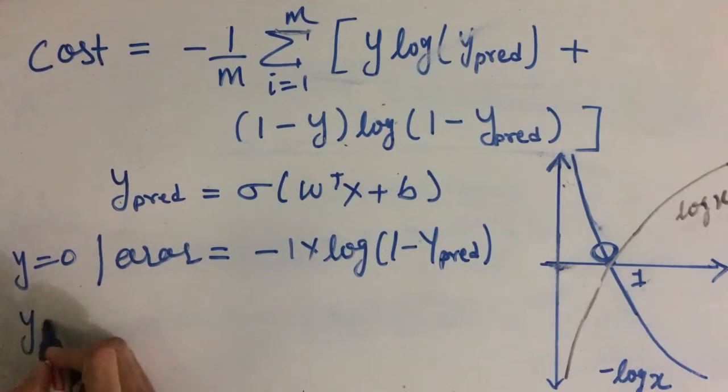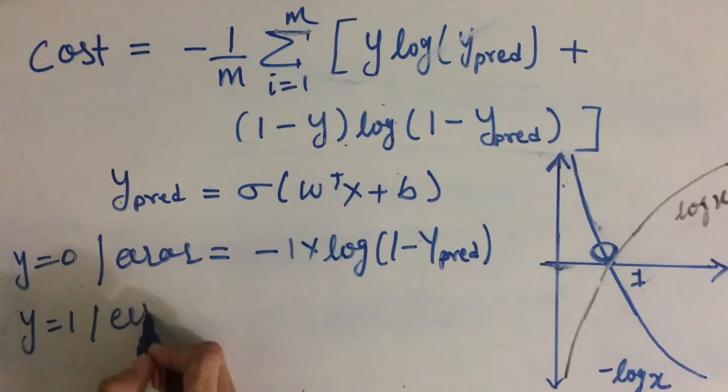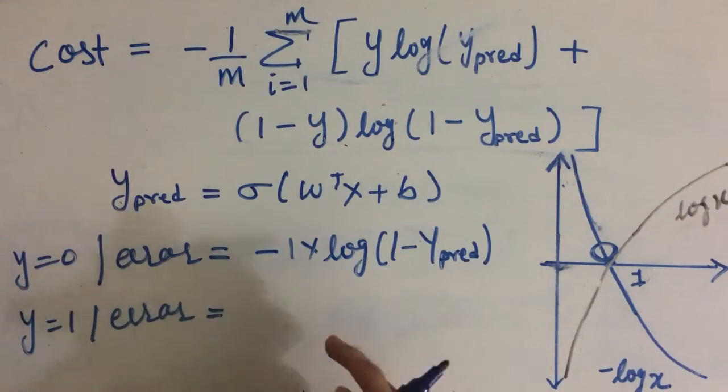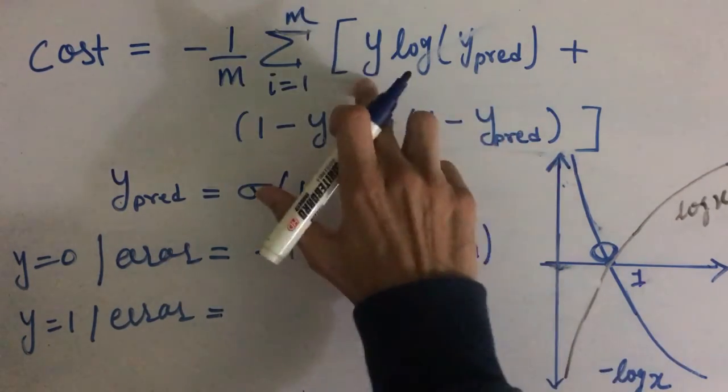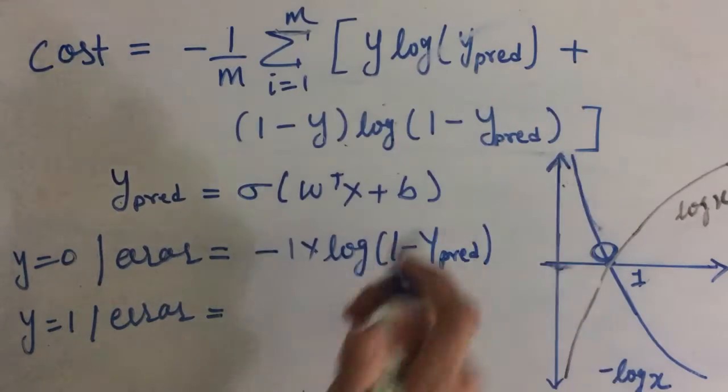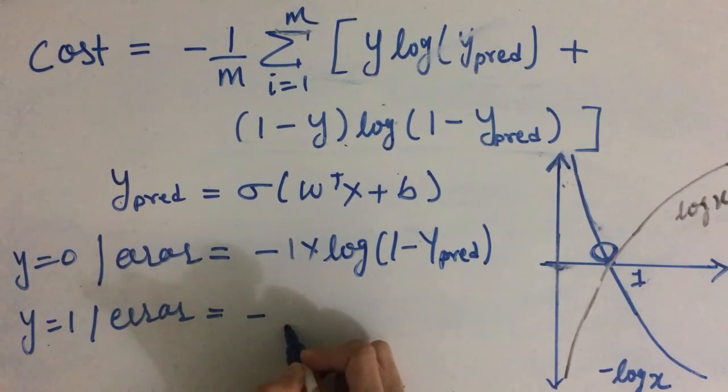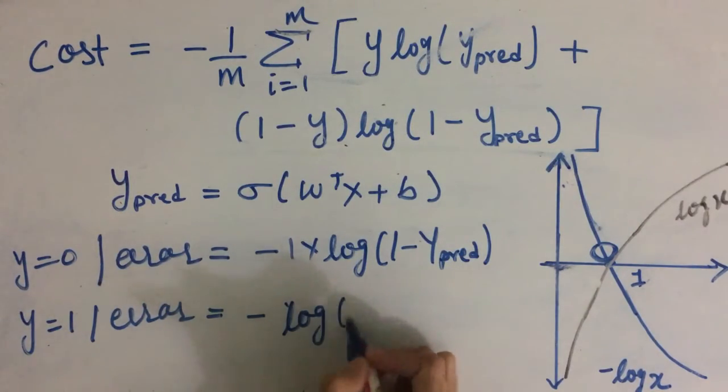Similarly, if y is equal to 1, then error for one observation - this will cancel out this time. So we will be only left with this much and error will be negative log of ypred.